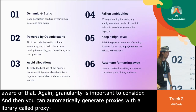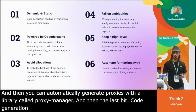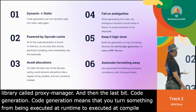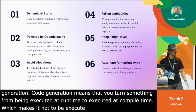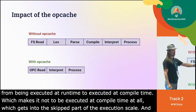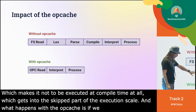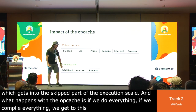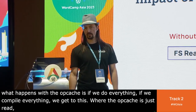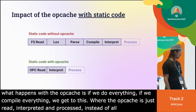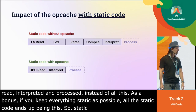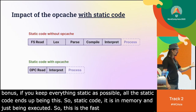The last concept is code generation — turning something from being executed at runtime to executed at compile time, which means it's not executed at runtime at all, getting us into the skipped part of the execution scale. What happens with the opcode cache is that if we compile everything, the opcode cache is just being read, interpreted, and processed, instead of being lexed, parsed, compiled, and so on. And as a bonus, if you keep everything as static as possible, all the static code ends up simply in memory and is just being executed — this is the fastest way because you're mostly not doing the logic at all.